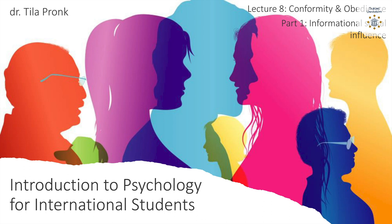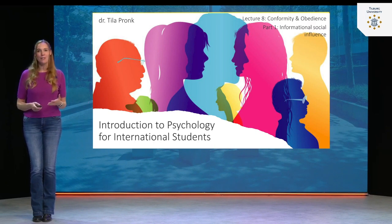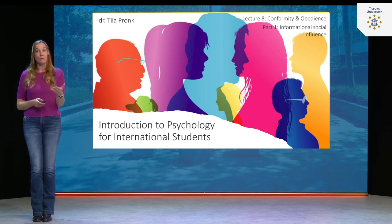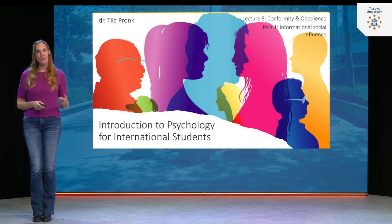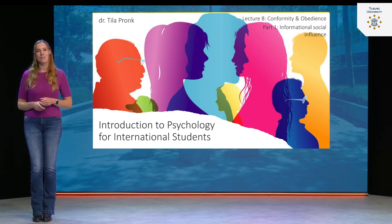This is lecture eight. In this lecture we'll be talking about conformity and obedience. We already made a start on these topics in lecture seven when we talked about the various ways in which we can be influenced — influencing tactics. We already saw that we are really prone to being influenced by other people, by mimicking their behavior, and also by an authority figure telling us what to do.